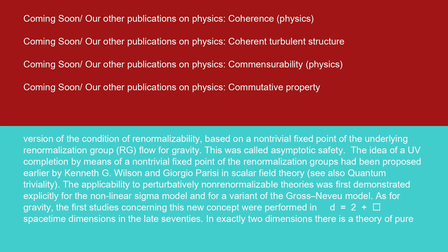The idea of a UV completion by means of a non-trivial fixed point of the renormalization group had been proposed earlier by Kenneth G. Wilson and Giorgio Parisi in scalar field theory. See also quantum triviality. The applicability to perturbatively non-renormalizable theories was first demonstrated explicitly for the non-linear sigma model and for a variant of the Gross Neveu model.